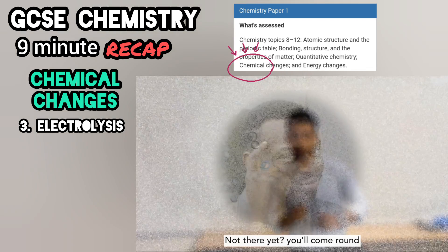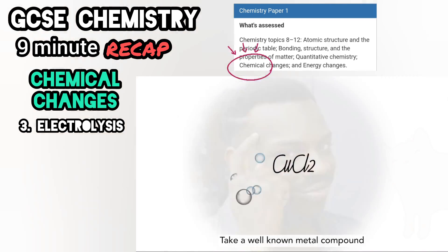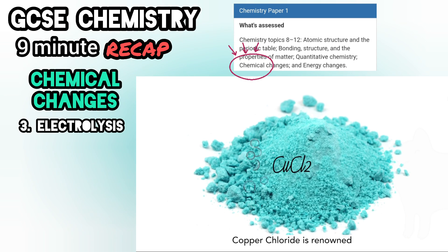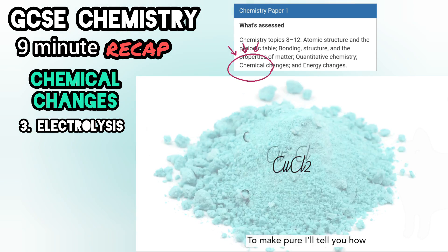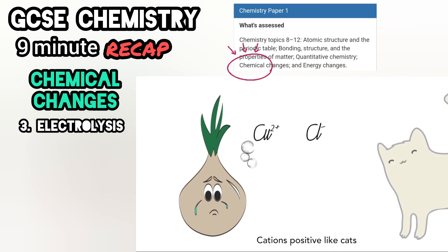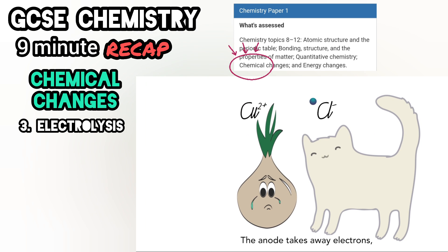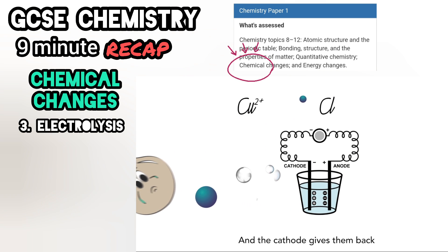Take a well known metal compound — copper chloride is renowned. To make it pure I'll tell you how: anions are negative like onions, cations are positive like cats. Anodes take away electrons and cathodes give them back.